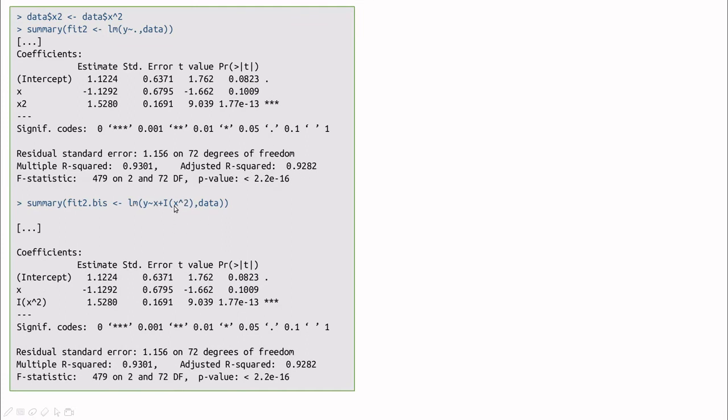Okay, the other way we can do that is using this indicator function. This I comes from indicator, and now we're saying that y is a function of x, and this indicator function of x squared. So basically, this is the same as this thing here, but this is cheaper.